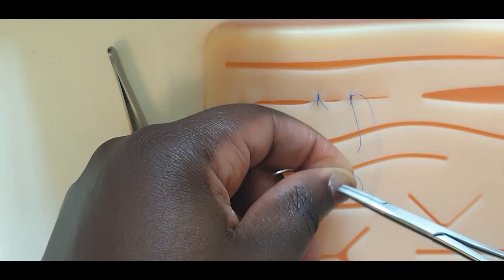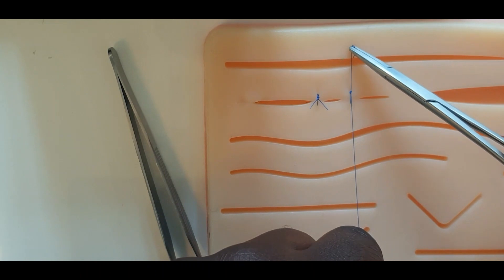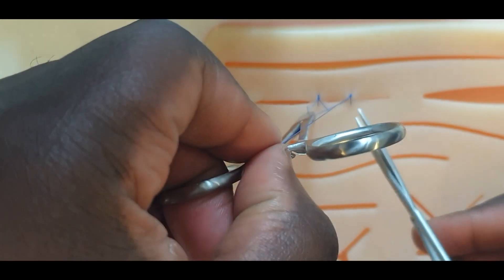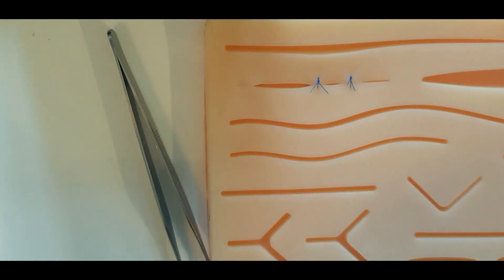This allows the wound to be further tensioned and the wound edges further approximated. The position of the threads of the reef knot that follows this are alternated to secure the knot.